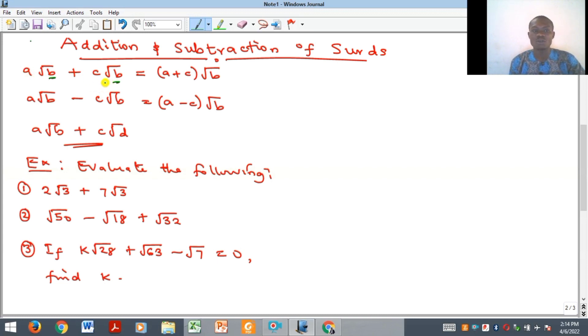And then when you add the coefficients, just pick one of the radicals, and that will give you your solution. The same thing is applicable for subtraction. But if you are now adding the similar surds where the radicals are different, like here we have root B and here we have root D, so there is nothing you can do here to simplify, whether it's addition or subtraction. So this becomes your final answer.